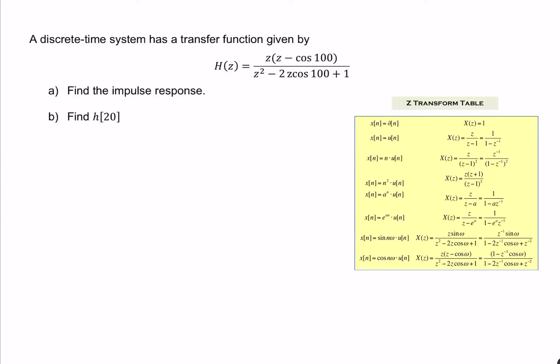In this question, we're given the transfer function of a discrete-time LTI system, H of Z, and we're asked for the impulse response. So the impulse response is H of N, and that would be the inverse Z-transform of the transfer function.